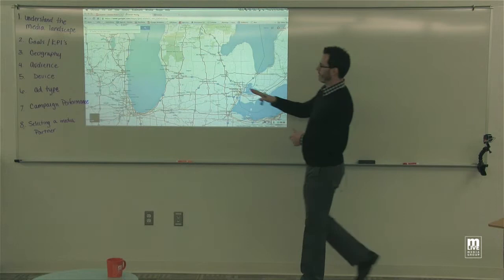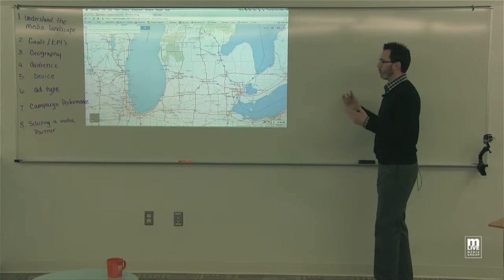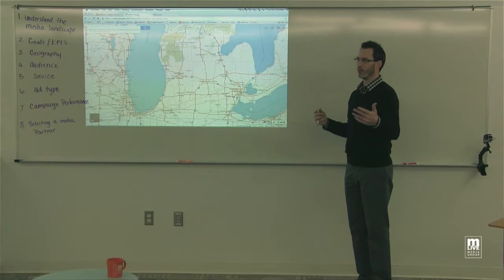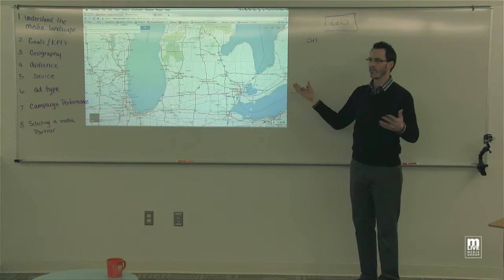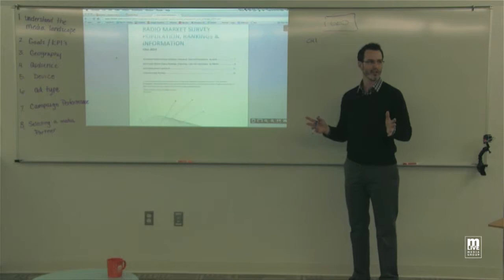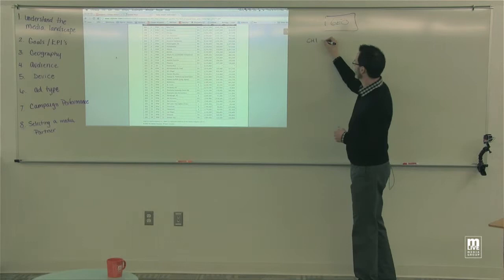Hypothetically, we're going to geo-target Chicago, Milwaukee, Grand Rapids, and Detroit. You want to find out the populations of these areas. If you type in 'market populations' you'll find Nielsen and Arbitron data. It doesn't need to be exact — it just helps you get a barometer for how much to put where. Chicago has approximately 8 million people, Detroit approximately 4 million, Milwaukee 1.5 million, and Grand Rapids 800,000 — totaling 14.3 million people.